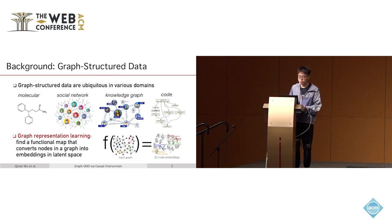We focus on modeling and learning on graph-structured data that are ubiquitous in various domains, such as molecular structures, social networks, knowledge graphs, and the dependency among functions in code. One important fundamental problem is how to obtain representations of graph data — finding a functional map that converts nodes in a graph into embeddings in latent space.